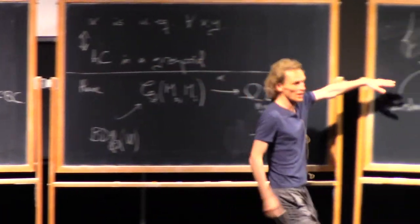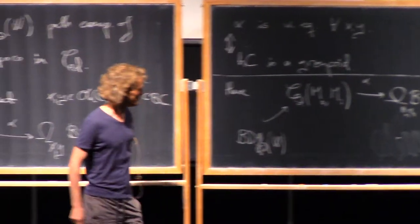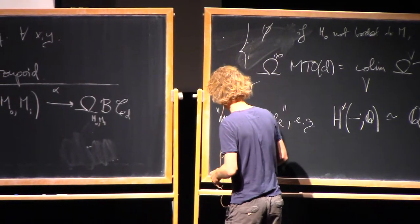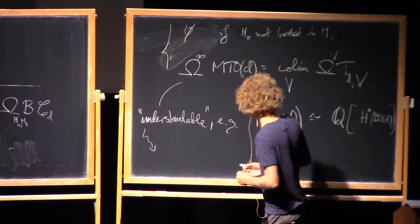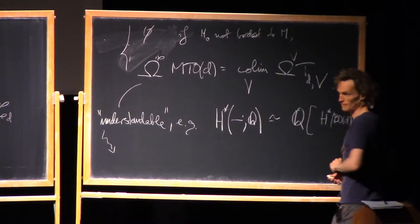Something like that. And if we have cohomology classes here, as long as we have a map, we can at least pull them back. Sure, I can't read it. It's the Q. It's the H star of what? EOD? Yep.